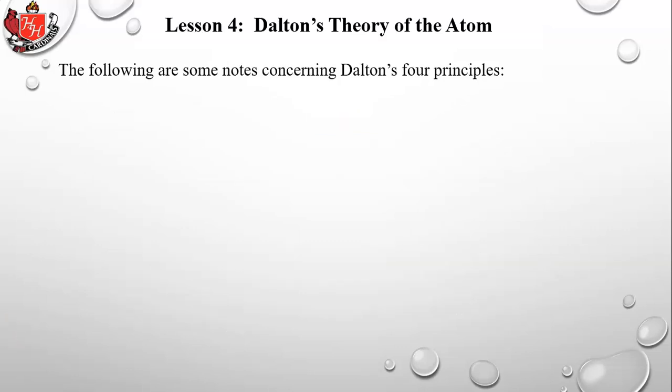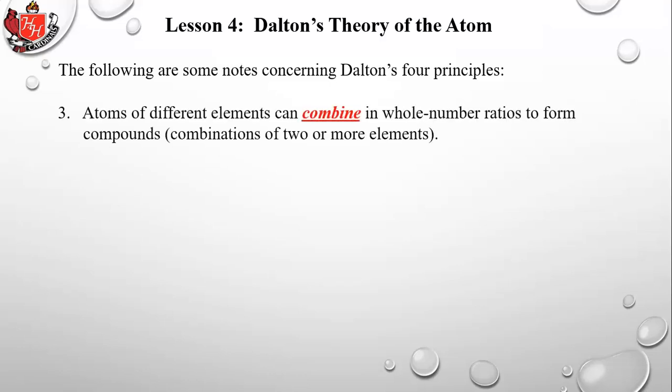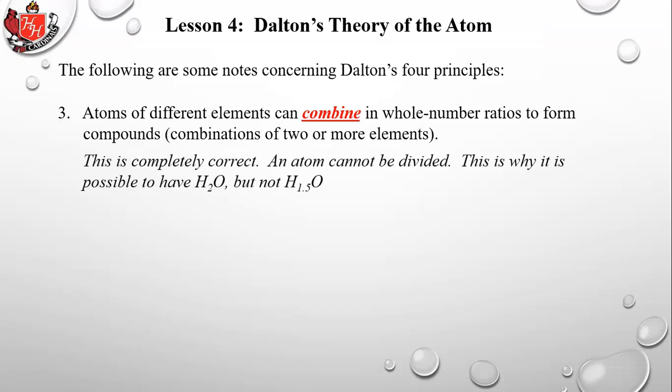Dalton's third postulate — atoms of different elements can combine in whole number ratios to form compounds — is completely correct. An atom cannot be divided, which is why you can have H₂O but not H₁.₅O. They must be in whole number ratios.